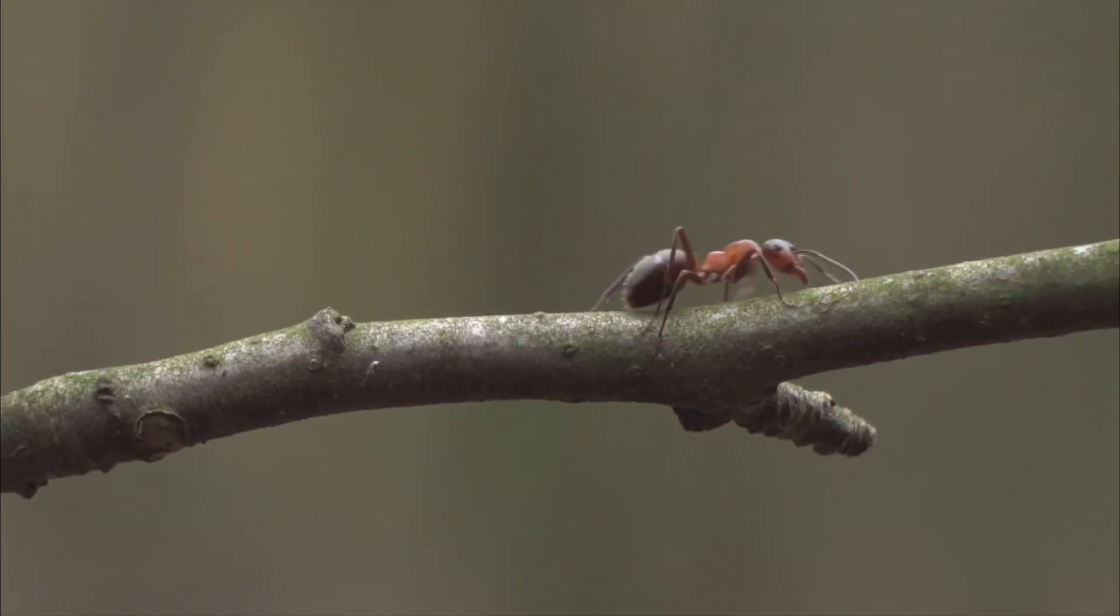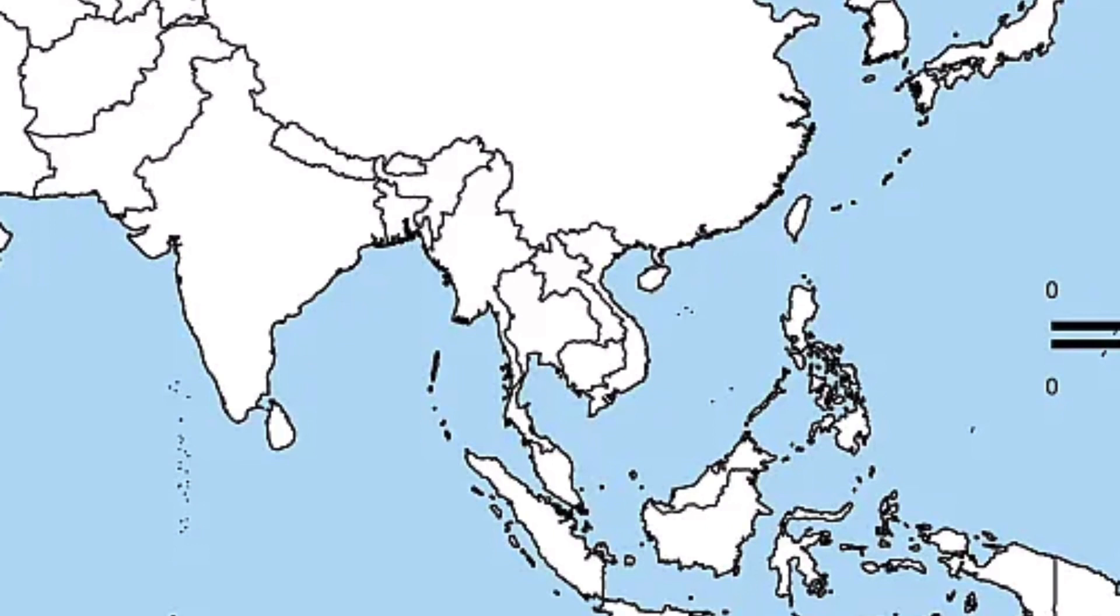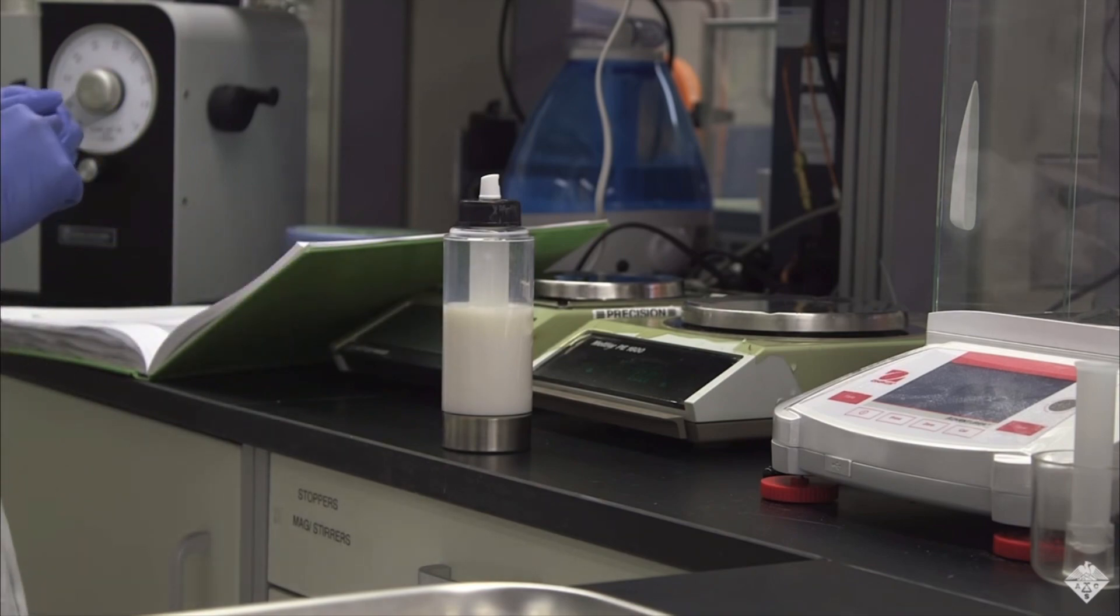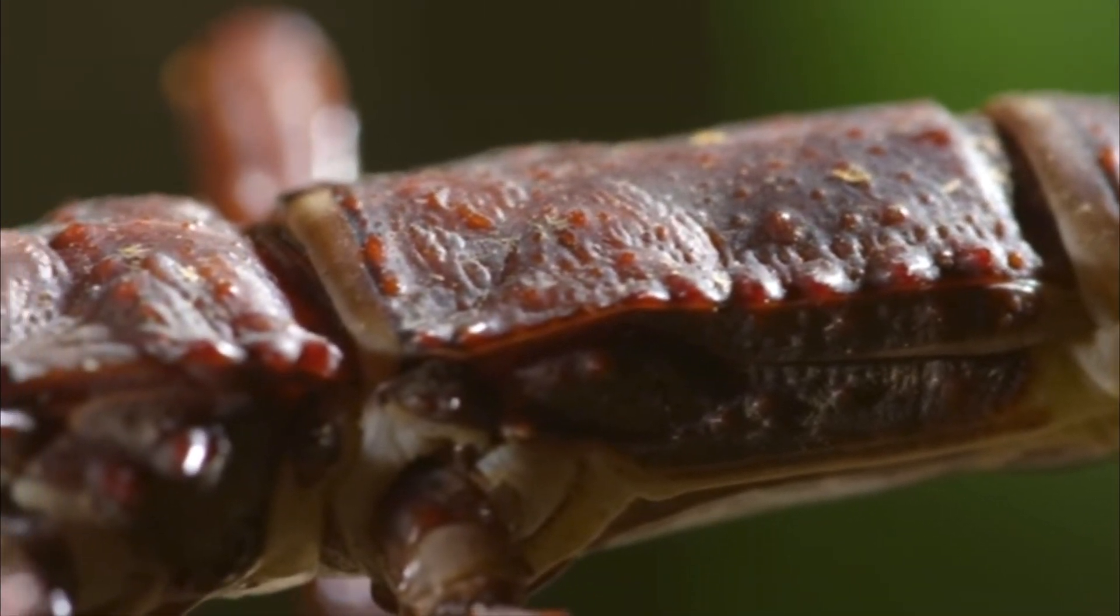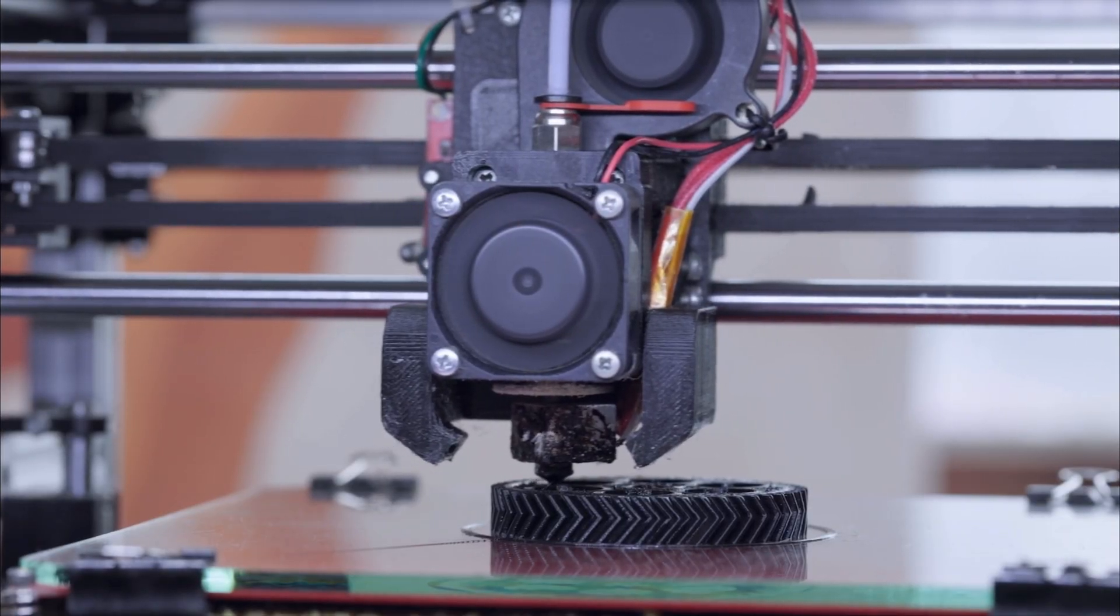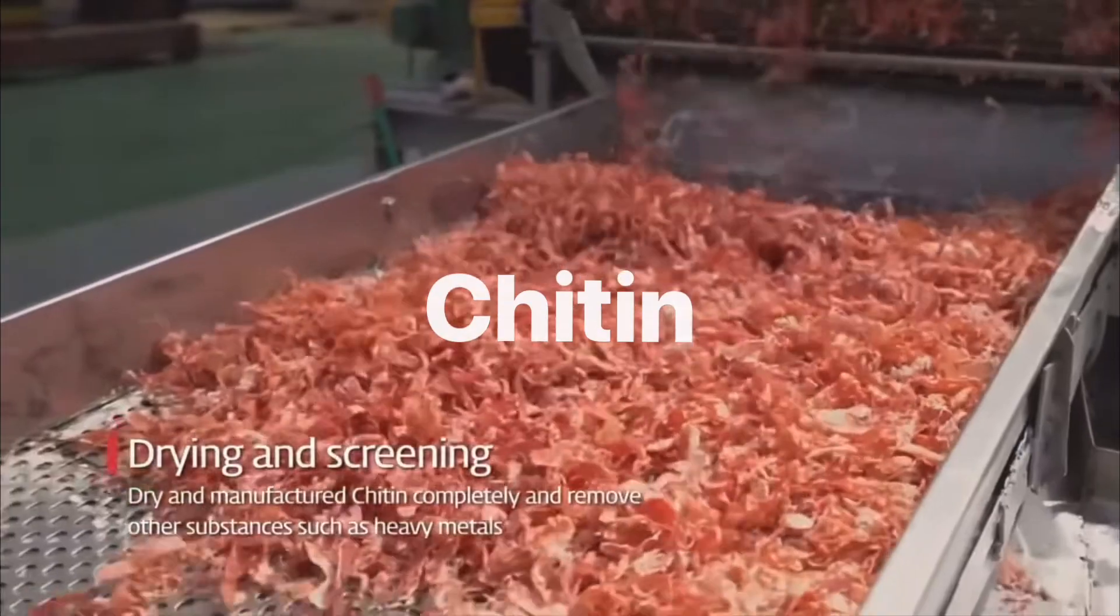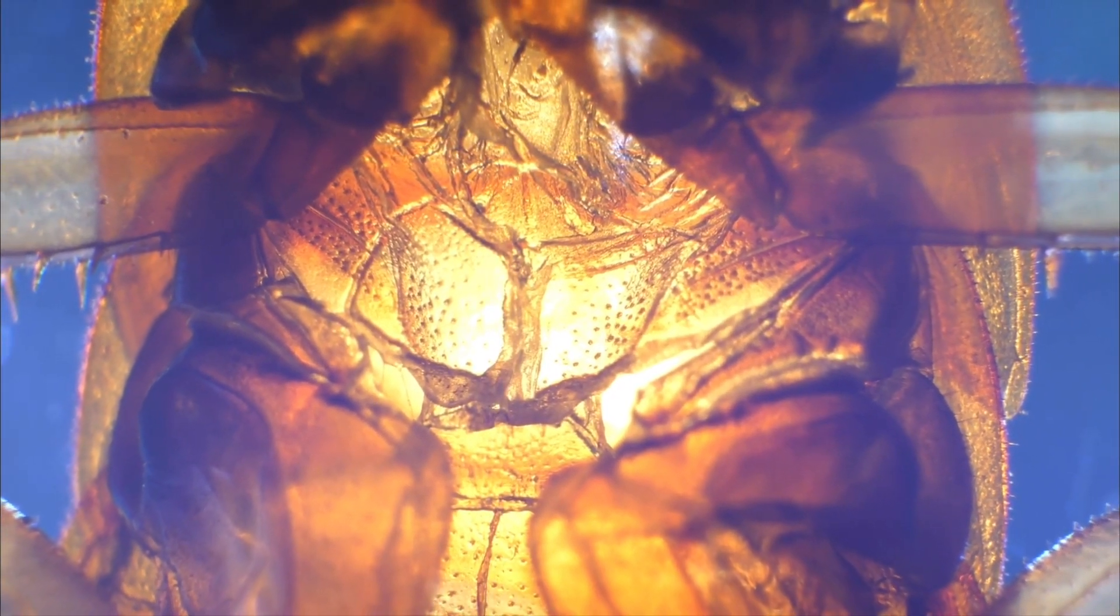Our final material may just give you the creepy crawlies. An international team of researchers from India, Malaysia, Singapore, and Thailand have successfully developed a method of using insects to manufacture an eco-friendly 3D printing polymer. Chitosan is a natural biopolymer that is derived from chitin, a carbohydrate found on the exoskeletons of insects and the shells of crabs.